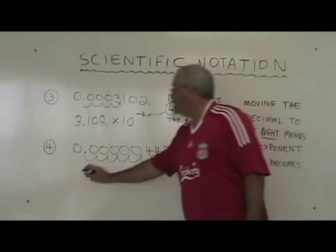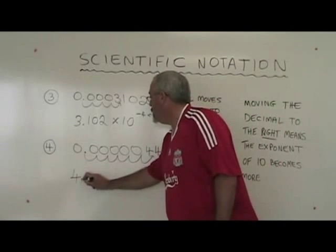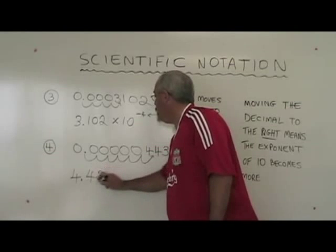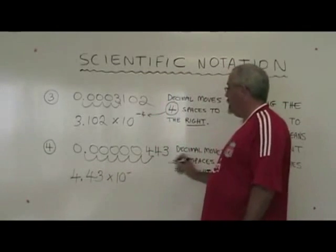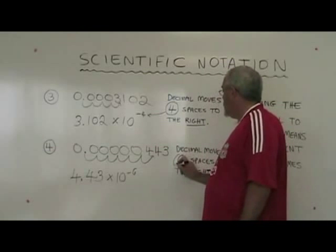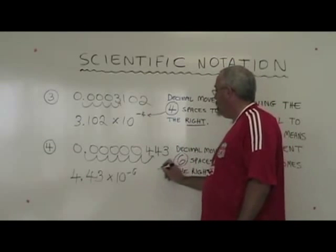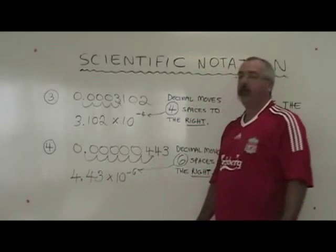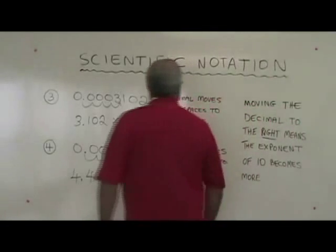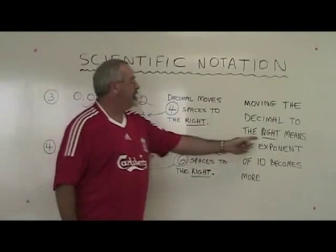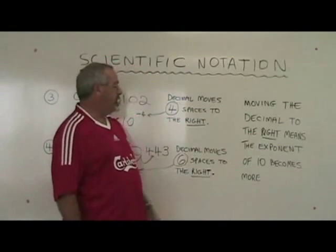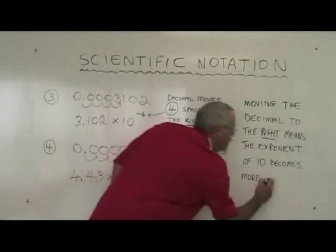My number becomes 4.43 times ten to the negative six. Because I move six spaces to the right, the exponent of ten is negative six. The rule, therefore, is when moving the decimal to the right, the exponent of ten becomes more negative.